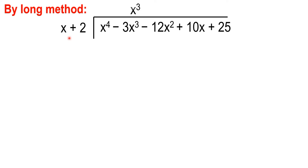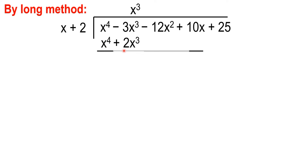x raised to 4 divided by x is x cubed. x cubed times x is equal to x raised to 4. Then, x cubed times 2 is positive 2x cubed. Now, let us subtract this. x raised to 4 minus x raised to 4 is 0. Negative 3 minus 2 is negative 5x cubed. Then, let's bring down the negative 12x squared.